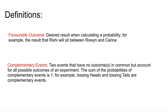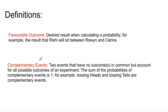But before then, we have to go through some definitions. Favorable outcome: write that down — it's the desired result when calculating a probability. For example, the result that Rishi will sit between Rowan and Karina. Complementary events are two events that have no outcomes in common but account for all possible outcomes of an experiment. The sum of probabilities of complementary events is one. For example, tossing heads and tossing tails are complementary events. If the favorable outcome is heads, then the complementary event is tails. If you do it three times, the favorable outcome is once — one in three — and two times will be tails, so two are complementary.